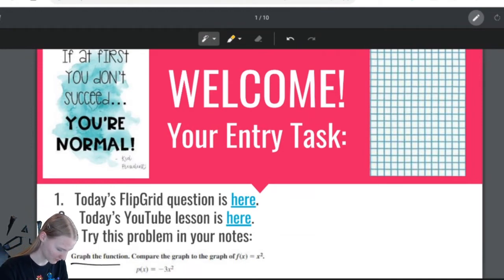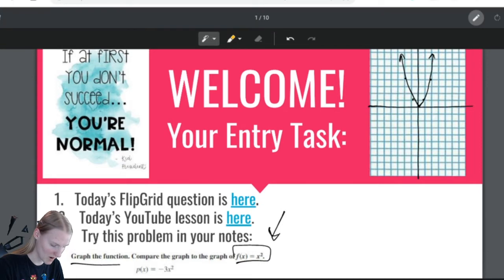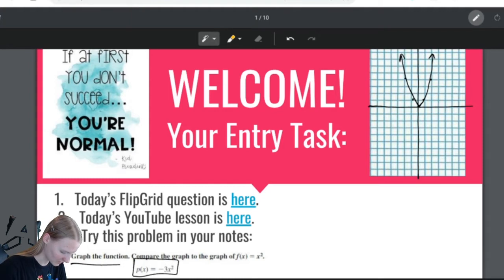So we are told to graph the function and compare it to the graph of f of x. First thing I'm gonna do is graph x squared, because that's nice and easy and I know how to do that. We have 0, 0, 1, 1, 2, 4, and that's all we really need to graph x squared. Remember, I'm gonna make my beautiful t table.